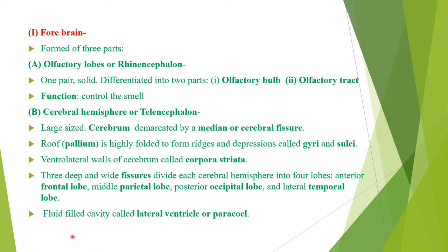We will discuss the forebrain, which is formed of three parts. The first is the olfactory lobe, also called rhinencephalon. In rat, they are one pair, small sized, solid, and differentiated into two parts: olfactory bulb and olfactory tract. The anterior swollen part is the olfactory bulb and the posterior narrow part is the olfactory tract. The function of olfactory lobes is to control the sense of smell. They are small sized in rat because rat is less dependent upon smell.